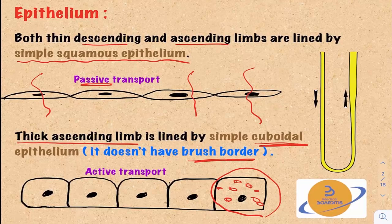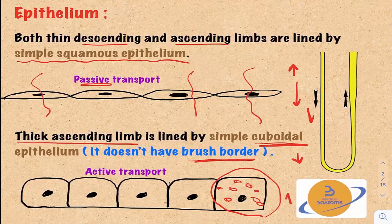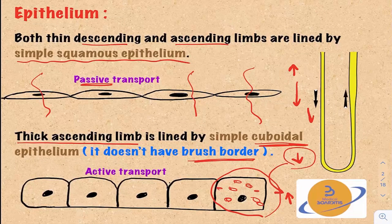Passive transport happens along the concentration gradient — from high concentration to low concentration — and does not require energy. This is in contrast to active transport, which moves solutes from areas of low concentration to high concentration and therefore requires energy.